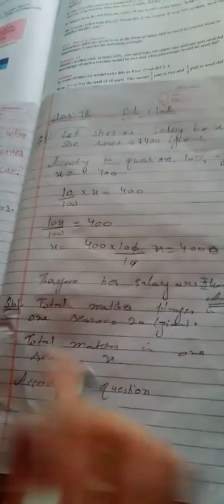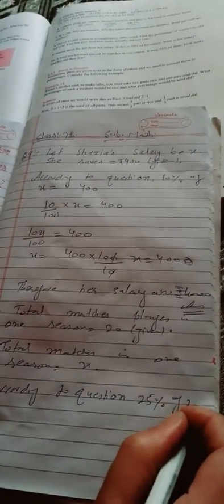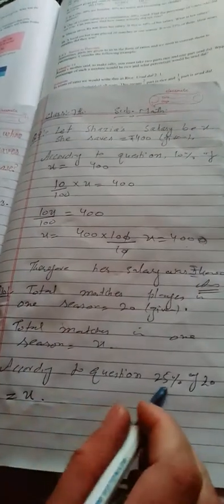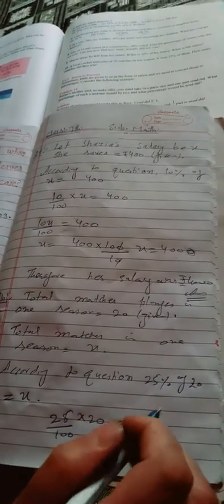According to question, they won 20% of them. So 20% of 20 equals X. That is 20 divided by 100 times 20 equals X. This equals 400 divided by 100, which equals 4.